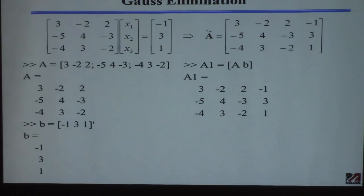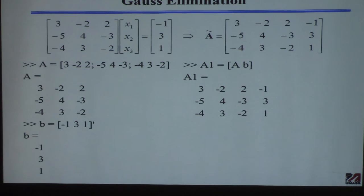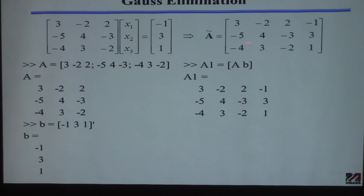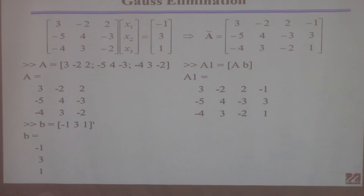Now let's say I want to write a code that performs Gaussian elimination. We have a matrix A and vector b — three equations, three unknowns. We assume a unique solution exists. The first step is to form the augmented matrix, and then perform row operations to reduce it to triangular form, zeroing out elements below the diagonal.